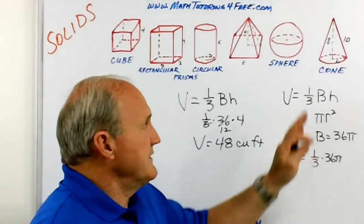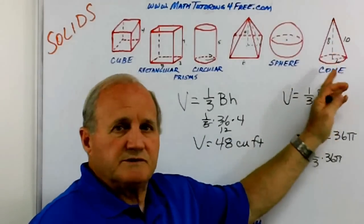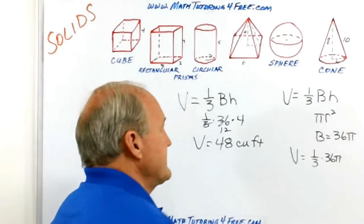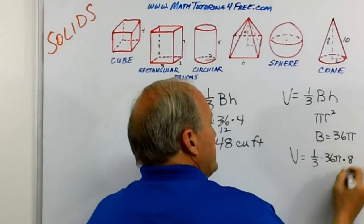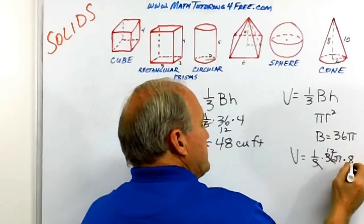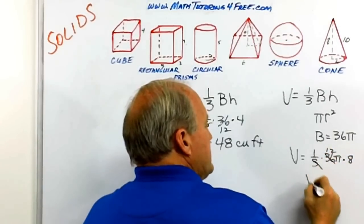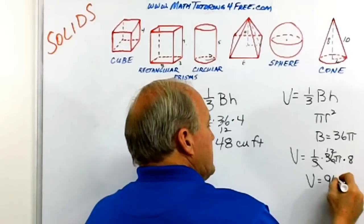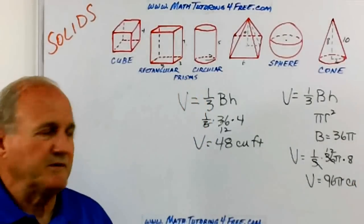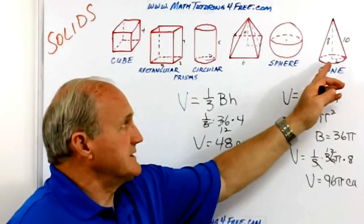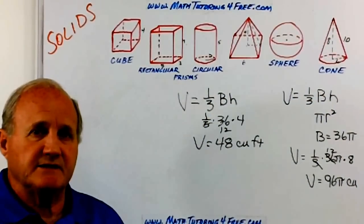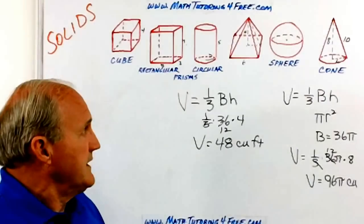So now the volume of this cone is equal to one third times the area of the base, which is 36 pi, times the height. Now, again, don't get confused. This is the height of the cone, which in this case is eight, not the slant height. In this case, it would be times eight. Three into 36, 12, 12 times eight is 96. So the volume in this case would be 96 pi cubic units. I hope you recognize that difference. It's the height of the unit that's the height to the vertex from the base, not the slant height.